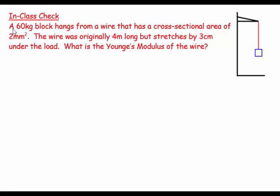Welcome to this class. This question says a 60 kilogram block hangs from a wire with cross-sectional area 2 square millimeters. The wire was originally 4 meters long but stretches by 3 centimeters under the load. What is the Young's modulus for this wire? Let's visualize this. Here we have the original wire and it's stretched.